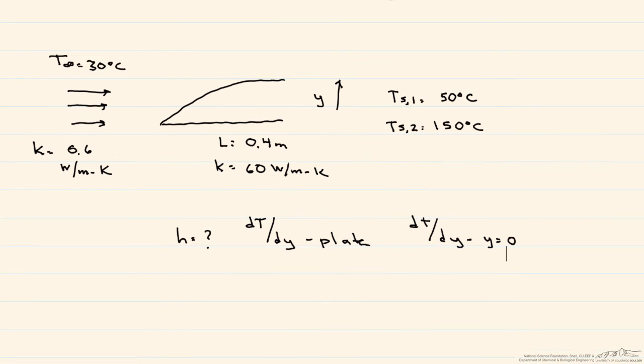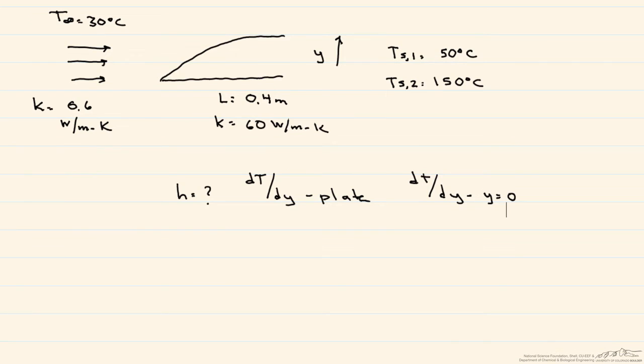The first thing we'll do is use the energy balance around the surface of the plate to find our convective heat transfer coefficient. What that says is the energy that leaves that surface, which is convection, and we'll use Newton's law of cooling to find the convection, is equal to the conduction that enters the surface.